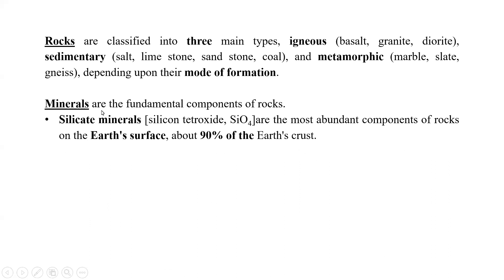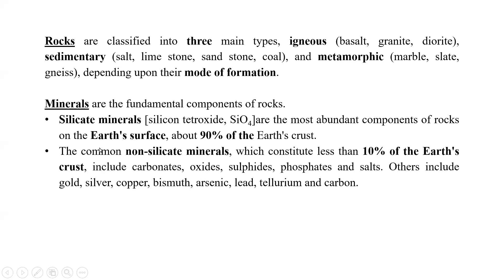The common non-silicate minerals, which constitute less than 10 percent of the earth's crust, include carbonates, oxides, sulfides, phosphates, and salts. Others include gold, silver, copper, bismuth, and arsenic lead. You know that these rocks are found in the form of ores — gold ores, copper ores. So all these minerals are found in the form of ores.